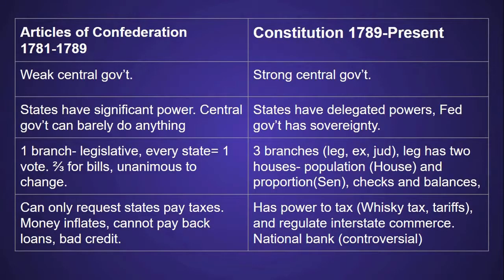First, the central government under the Articles of Confederation was weak, and this is what led to its downfall, while the Constitution created a far stronger government. Under the Articles, states had significant power — nearly as much as an independent country would — while the central government could barely do anything. Under the Constitution, there was a clear delegation of powers to both the federal government and state governments. While state governments have specific areas of control, like education, the federal government had sovereignty over the states.